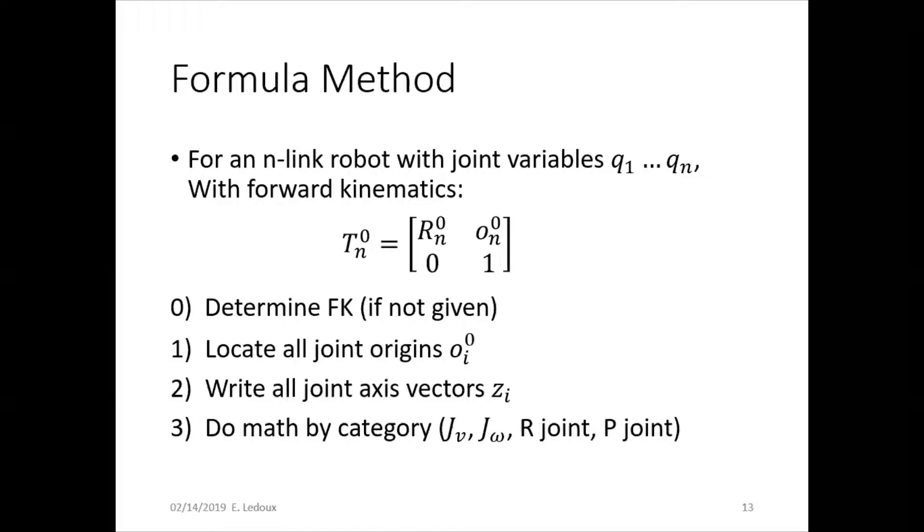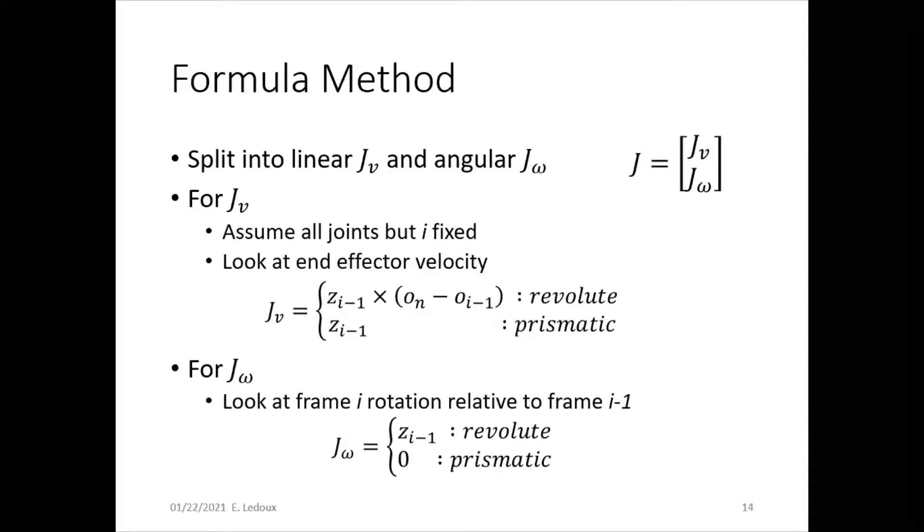And then we can do the math by categories for getting the velocity, linear and angular Jacobians for r joints and p joints using these formulas.